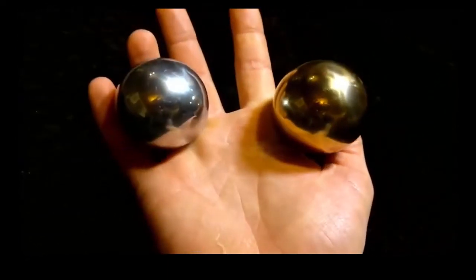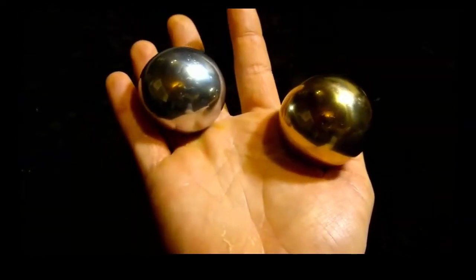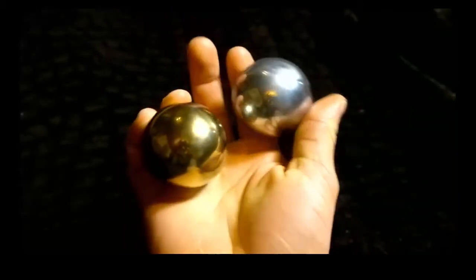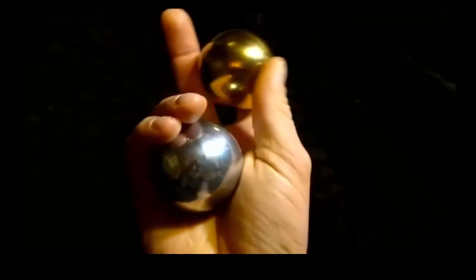First, you need to be able to separate the balls around. Grasping one ball with your thumb, rotate it around to your little finger. Grasping it with your little finger, just rotating it around.